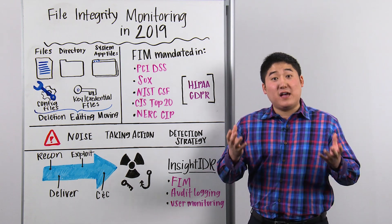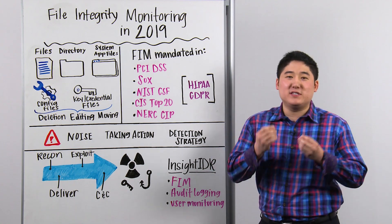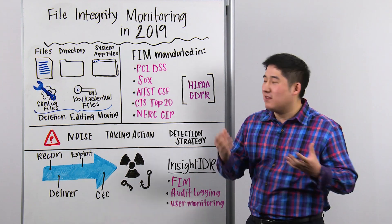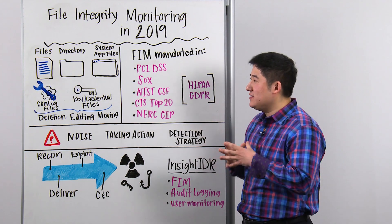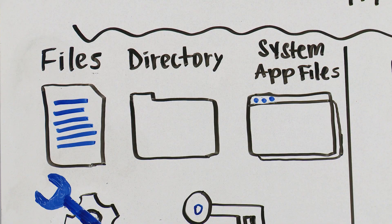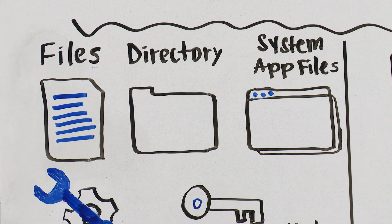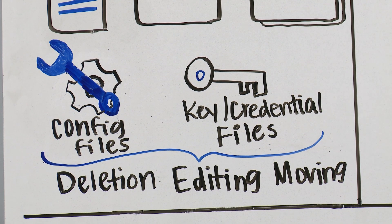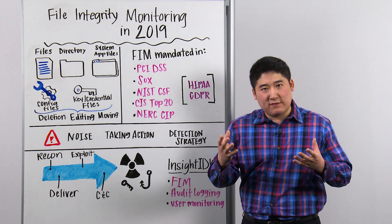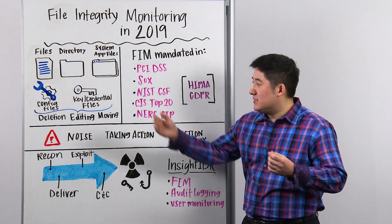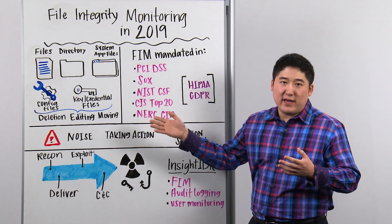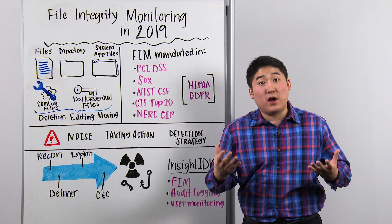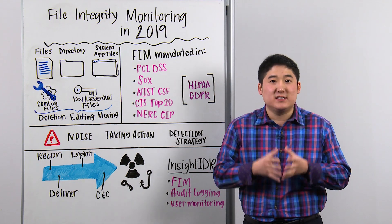File integrity monitoring gives you file-level visibility into whatever's important in your organization. The classic use case is sensitive data, protected health information, and customer data, but those use cases have extended to include things like system and app files, configuration files, and key and credential files. Basically it gives you the visibility to see if anybody is deleting, editing, moving, or has unauthorized access to these sensitive files.